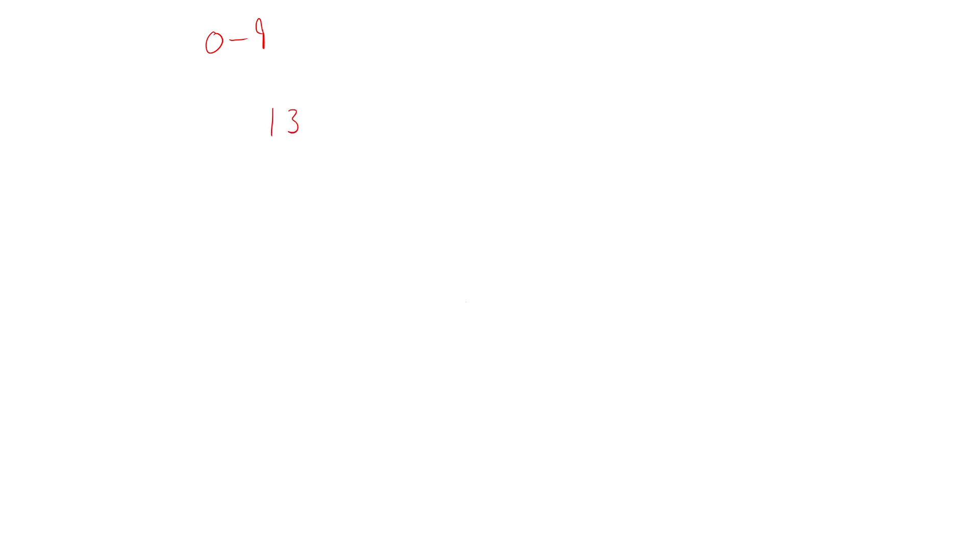Base 10 number systems are the ones that you are most familiar with — you use them every single day whether you know it's base 10 or not. The way that base 10 works is that we allow for digits zero to nine to be used, so this is 10 different digits that you can possibly use. We can construct numbers by combining these digits together — for instance, the number 13 is the combination of two digits: digit one and digit three.